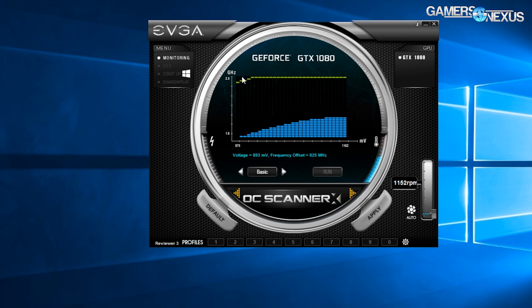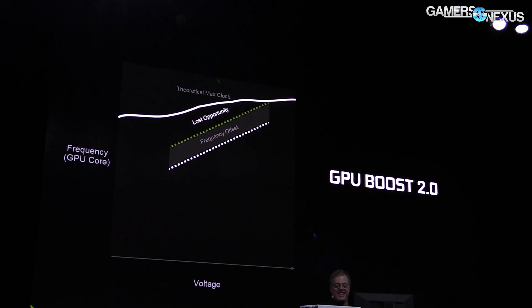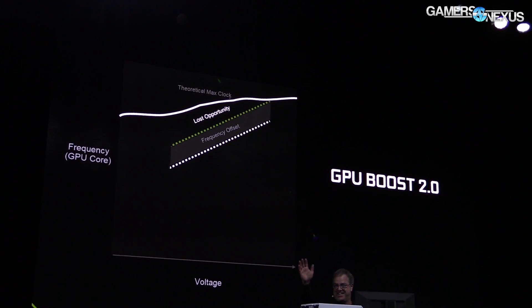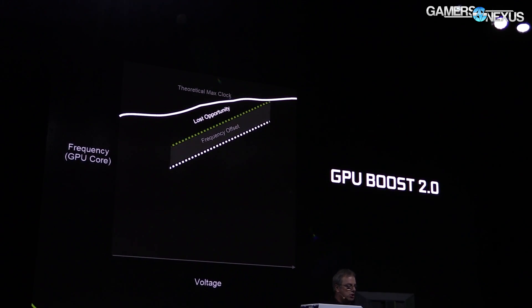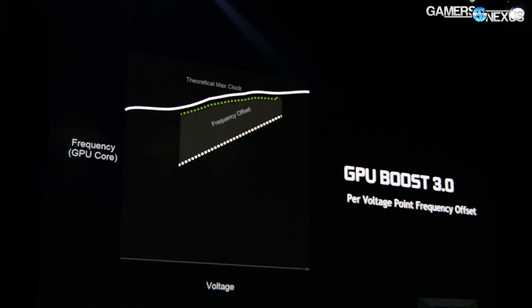What that allows you to do is really get much, much closer to what I call the theoretical horizon of your GPU performance. If you had to have one frequency offset, somewhere along that curve you'd fail because it's linear. Now by allowing it to be deformed to match your real GPU, you can get higher performance.